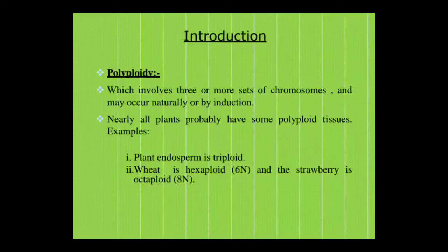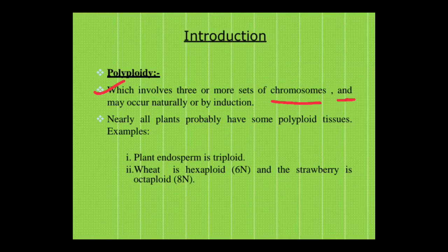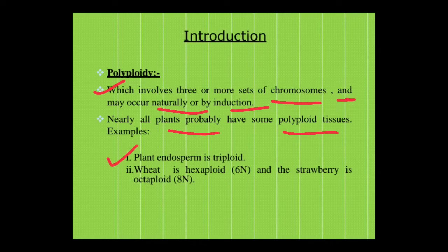First of all, we need to know what polyploidy means. It involves three or more sets of chromosomes and may occur naturally or by induction. Nearly all plants probably have some polyploid tissues. For example, the plant endosperm is triploid, wheat is hexaploid, and the strawberry is octaploid.